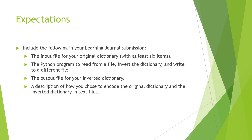Deliverables: an input file of your original dictionary with at least six items, and the program that will read from a file and invert the dictionary as well as write to a different file. It needs to read input from one file and process and output to a different file.